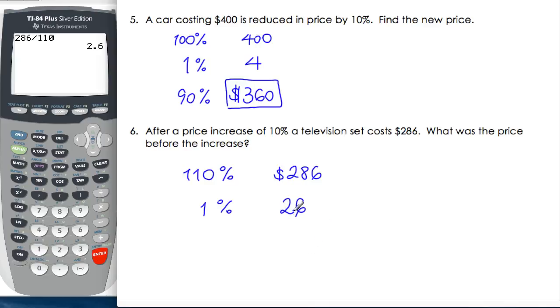So therefore, now, what was the price before the increase? So the price before the increase was the 100%, and that answer should be easy enough without the calculator, times 100 to get $260. Alright? So again, read the question, set up what you know, work back to 1%, or find what 1% is, and then out to what you're after.